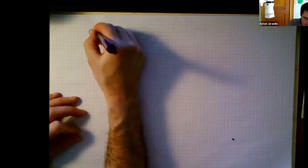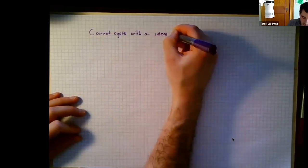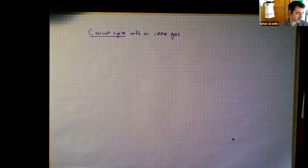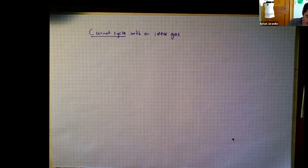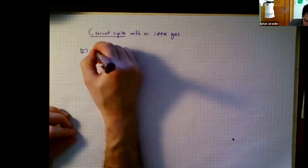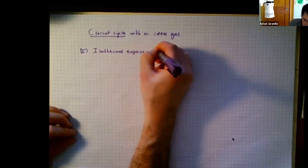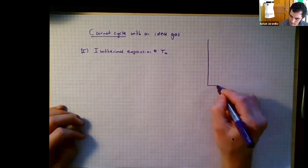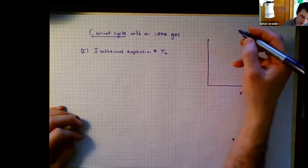Let's talk about one ideal cycle — the most famous one: the Carnot cycle with an ideal gas. There are many reversible cycles you can calculate for an ideal gas; Carnot is just one, but it's a famous one. The Carnot cycle starts with isothermal expansion at T_hot. For an ideal gas, the energy depends only on temperature, so isothermal processes don't change the energy of an ideal gas.